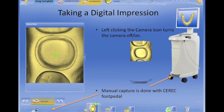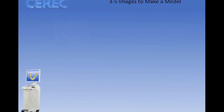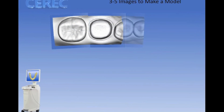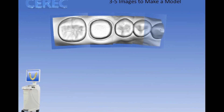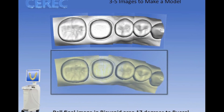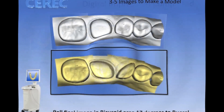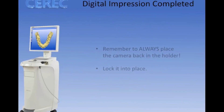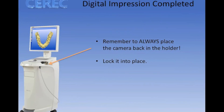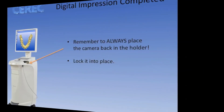You can still do manual capturing if you prefer that or if you have a tough patient. It's going to take three to five images to make a complete quadrant model. On your last image, please make sure you roll that to the buccal — that's a really nice trick. It helps with your buccal bite stitching where it gets that attached tissue. And last but not least — this is a very expensive mistake — always make sure you lock the camera back in the holder.